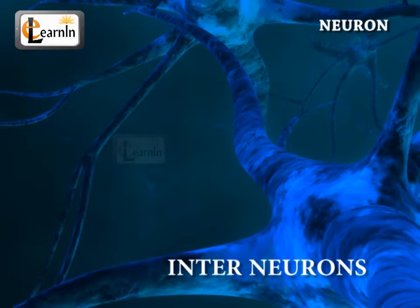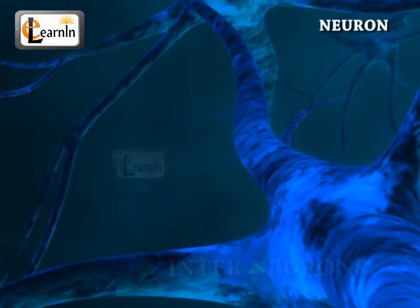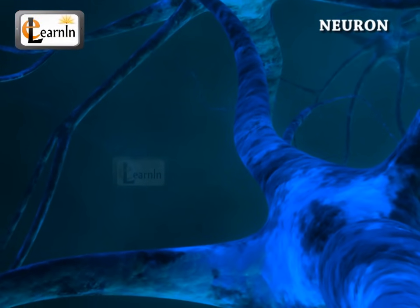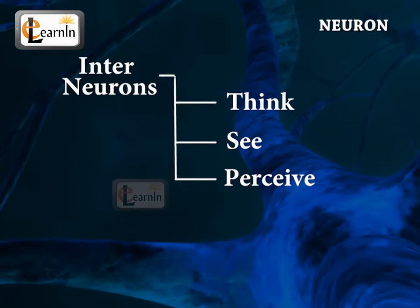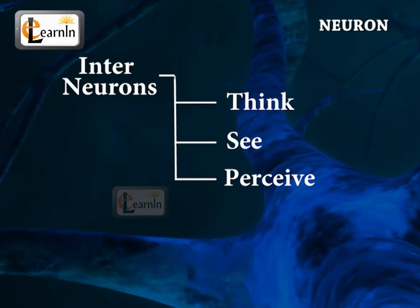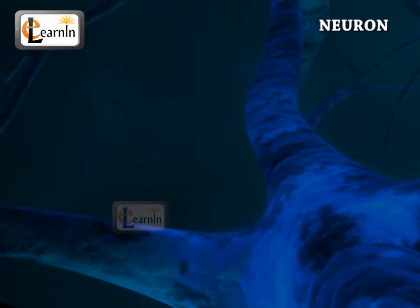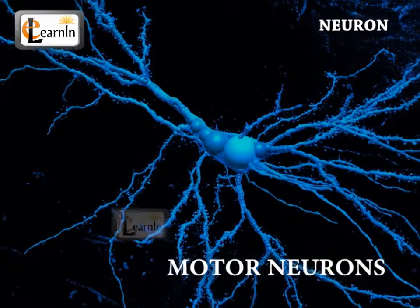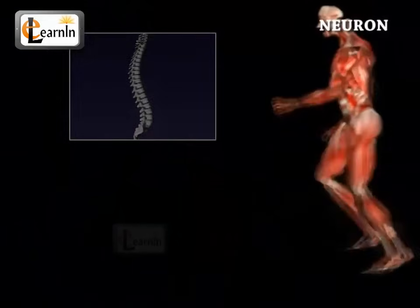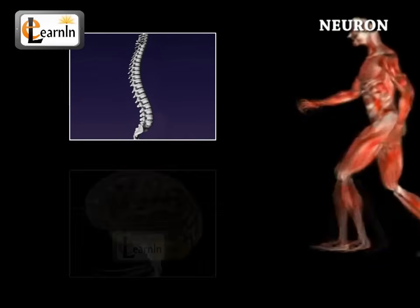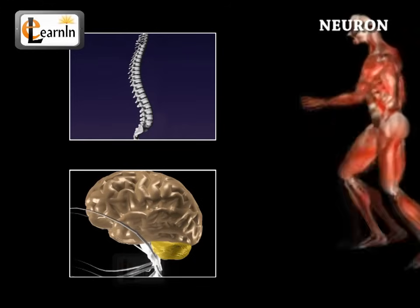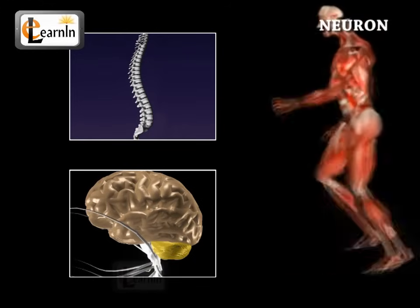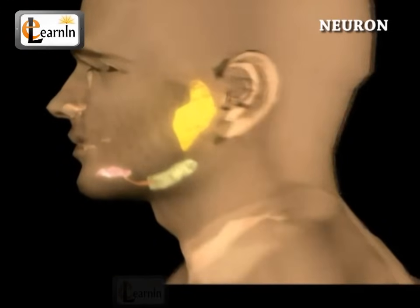Interneurons communicate and connect with each other, and represent the majority of neurons in our brain. They allow us to think, see, and perceive our surroundings. Motor neurons are neurons that receive impulses from the spinal cord or the brain and send them to the muscles causing muscular contraction, and these also affect the gland secretion.